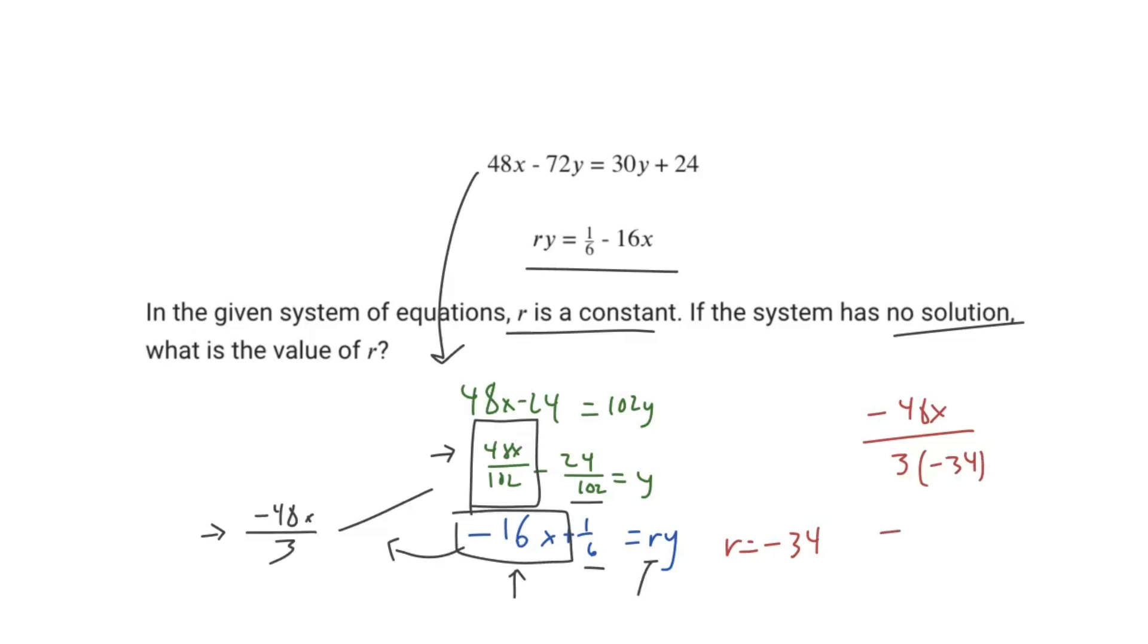So we'll get negative 48x over 3 times negative 34 is negative 102. So negative 102, or negative 48x over negative 102, like we said before, is the same thing as just 48x over 102.